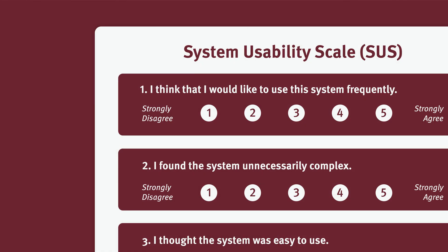For example, take these questions from a famous UX Likert scale, the System Usability Scale. Question 1 is worded positively: 'I think I would like to use this system frequently.' Question 2 is worded negatively: 'I found this system unnecessarily complex.' The alternating of positive and negative statements, which is called reverse-keyed statements, continues throughout the scale and helps counteract acquiescence bias.